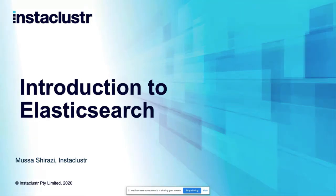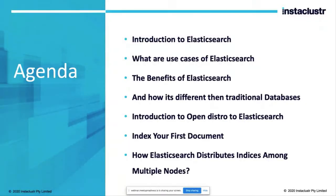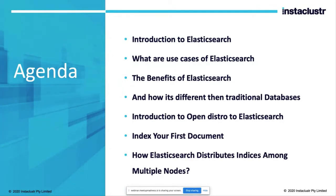Let's get started. We're going to talk about an introduction to Elasticsearch. I'm going to cover what Elasticsearch is, its use cases, its benefits, and how it differs from traditional databases. Then we'll discuss a distribution called OpenDistro for Elasticsearch, which we use on our managed platform, and how to index your first document and distribute documents.